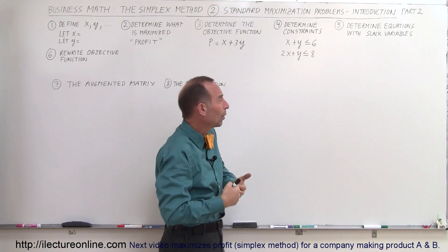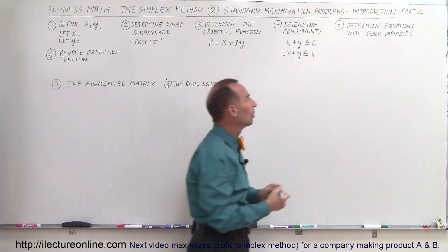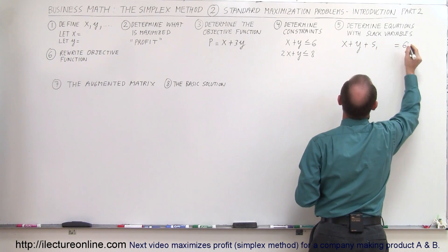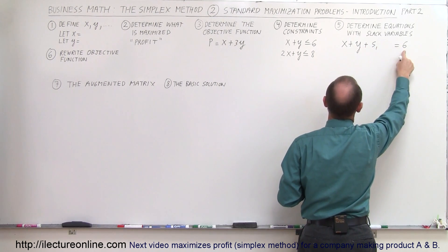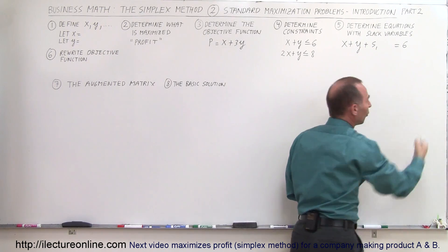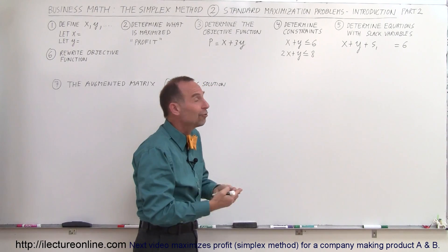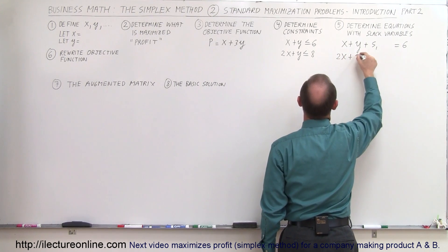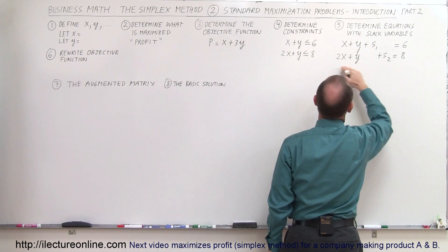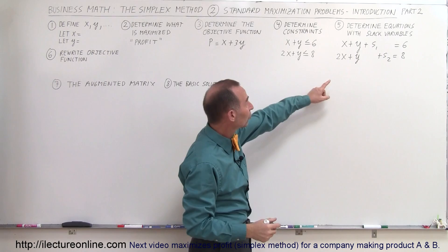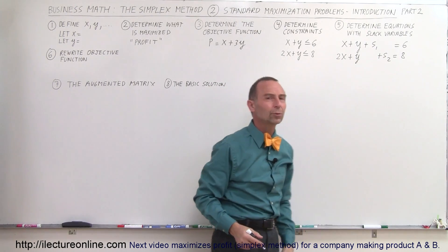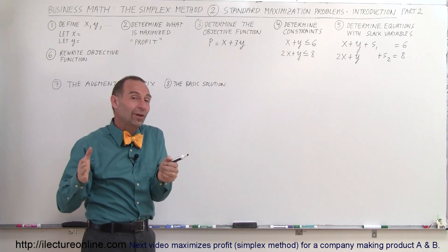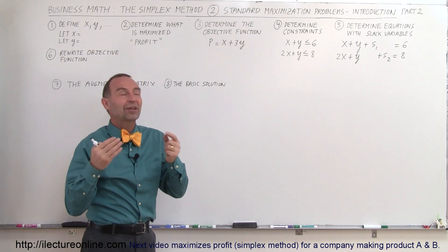If x plus y is less than 6, we add a slack variable to make it equal to 6: x plus y plus S1 equals 6. For example, if x and y are 0, then S1 equals 6; if x and y are both 1, then S1 equals 4. Similarly, 2x plus y plus S2 equals 8. The slack variable simply takes up the slack so you can turn an inequality into an equation, because you can't put inequalities into a simplex tableau — you have to use equations.